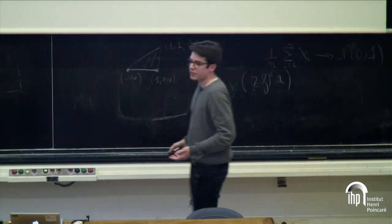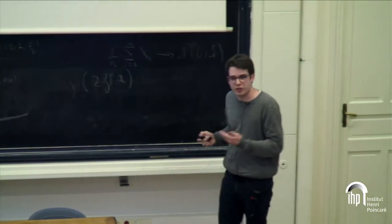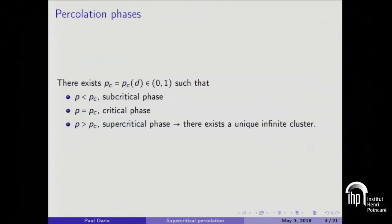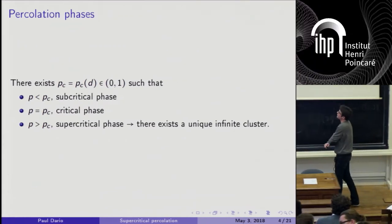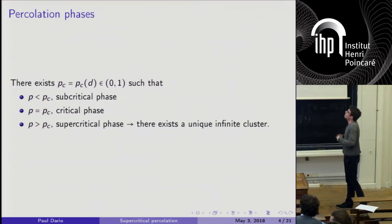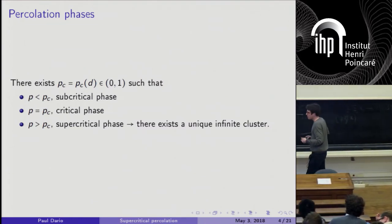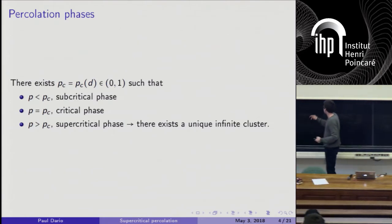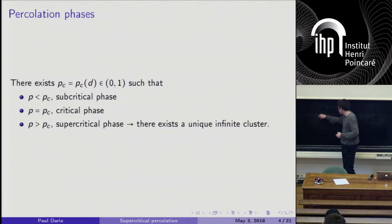If P equals Pc, we don't know. It's a big open conjecture to prove that in dimension larger than 3, there is no infinite cluster at P equals Pc. We focused on the supercritical case, P larger than Pc. The philosophy is that when P is larger than Pc, there is one infinite component, and this component fills out the entire space — the infinite cluster looks like ZD — and since it looks like ZD, we are able to adapt the homogenization theory.